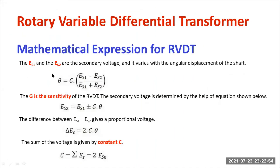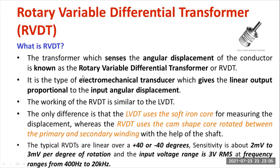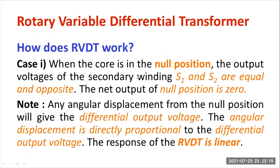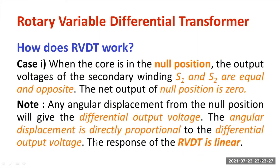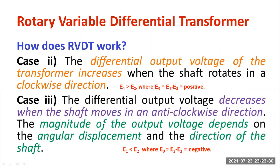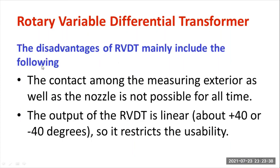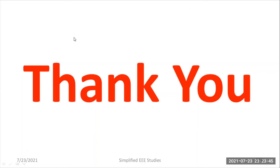In this session, I discussed what is meant by RVDT. I first recommend watching the LVDT video. RVDT is mainly used for measurement of angular displacement, and the output is 100% linear in the range of plus and minus 40 degrees. It works similarly to LVDT but uses a cam-shaped core. There are three cases depending on the core position: at center (null), rotating clockwise, and rotating anticlockwise. I also listed the pros and cons and various applications of RVDT. Thank you for watching.